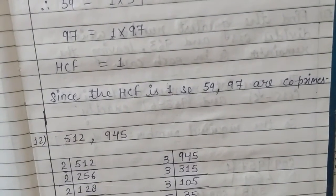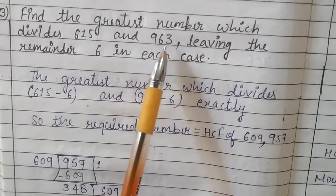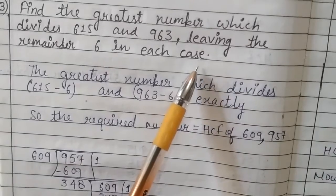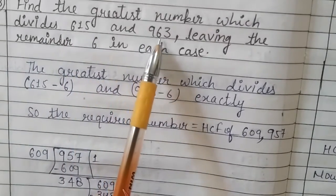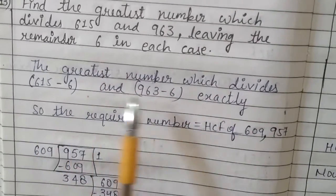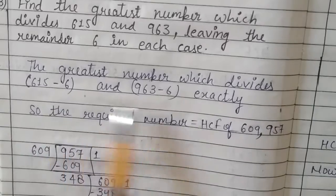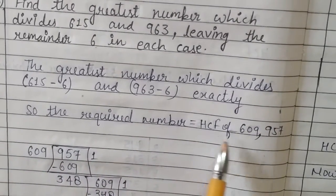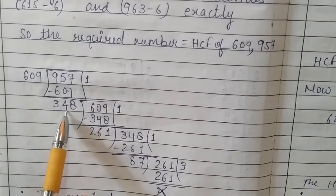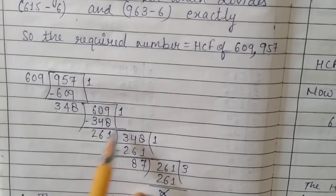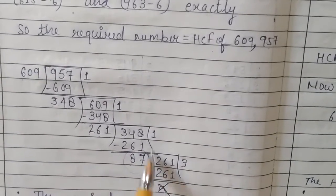Question 13: Find the greatest number which divides 615 and 963 leaving the remainder 6 in each case। हमें greatest number find करना है जो 615 और 963 को divide करे, remainder 6 छोड़कर। तो हम दोनों में से 6 minus कर देंगे: 615 − 6 = 609, 963 − 6 = 957। So the required number = HCF of 609 and 957। HCF निकाला — 609 को 957 से divide किया, remainder 348; फिर 261, फिर 87; last divisor = 87। Required number = 87.